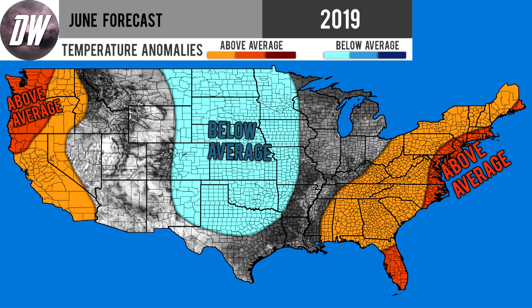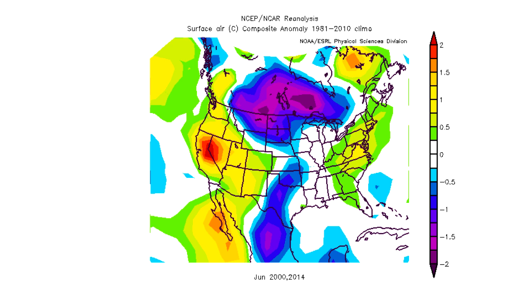Just to remind you, here's a look at my temperature forecast — I'm going to show this multiple times during this video. You saw those three models I just showed, and here was what my forecast was for temperatures. You can see this looks quite similar to all those models: cold in the central United States and then warm on the two coasts.